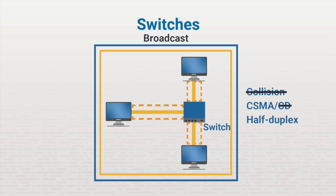Instead of being limited to using half-duplex, our network can now use full-duplex, which allows the devices to send and receive data at the same time. But be aware that using a switch doesn't affect the broadcast domain, because its broadcast domain still consists of all the devices connected to it. The switch will still forward broadcast traffic from one device to all those other devices, just like a hub does.